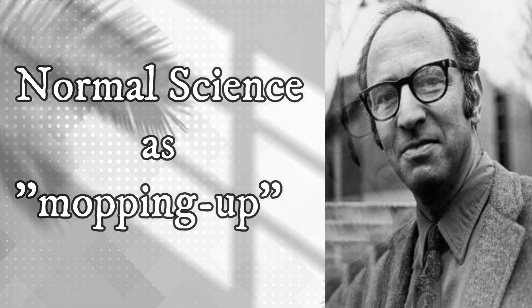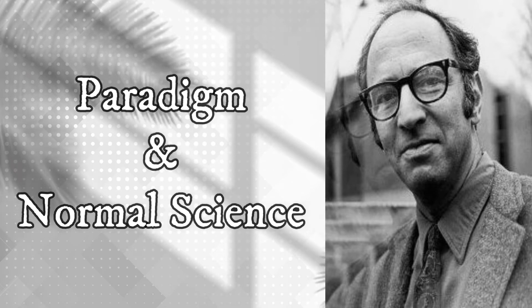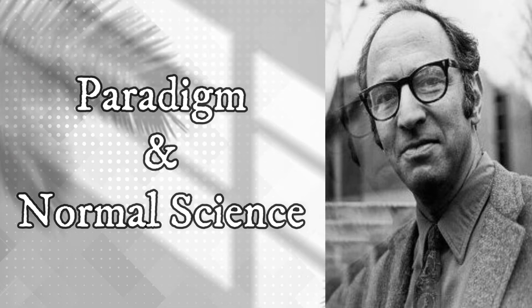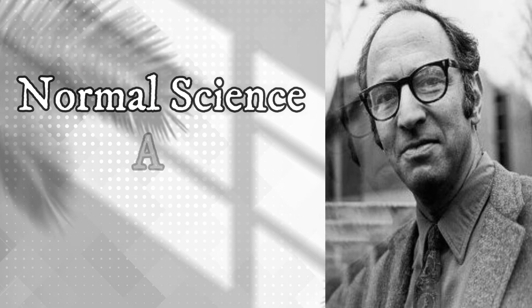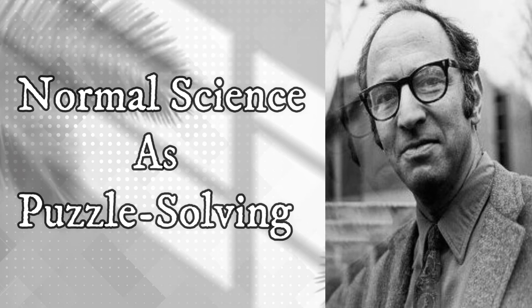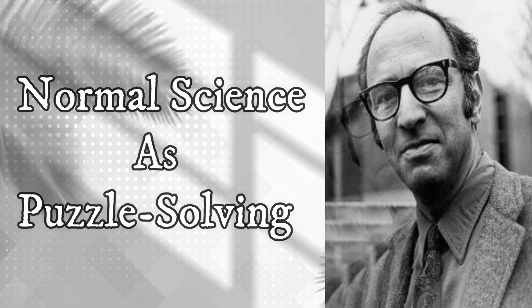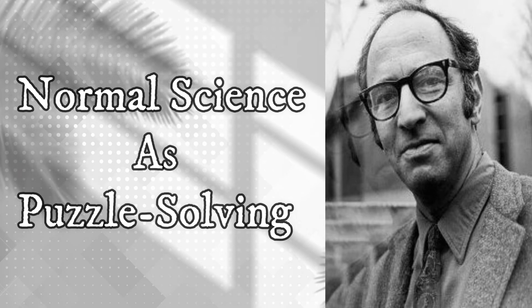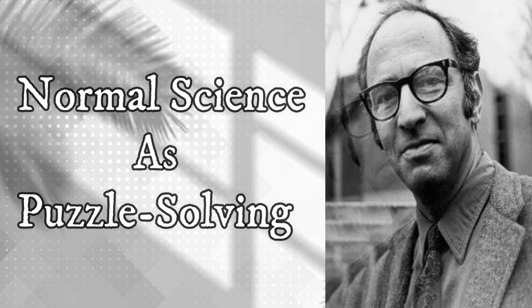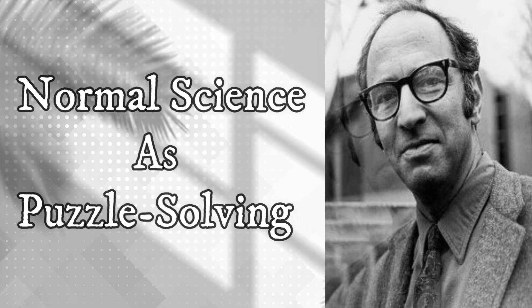Normal Science provides what Kuhn called a mopping-up operation for a paradigm. While following a paradigm, scientists explore in depth the problems defined by the paradigm and utilize the techniques suggested by the paradigm while exploring those problems. Kuhn likened normal science to puzzle-solving. The problems of normal science have an assured solution, and there are rules that limit both the nature of acceptable solutions and the steps by which they are to be obtained. Kuhn saw neither normal science nor puzzle-solving as involving much creativity. Perhaps the most striking feature of normal research problems is how little they aim to produce major novelties.